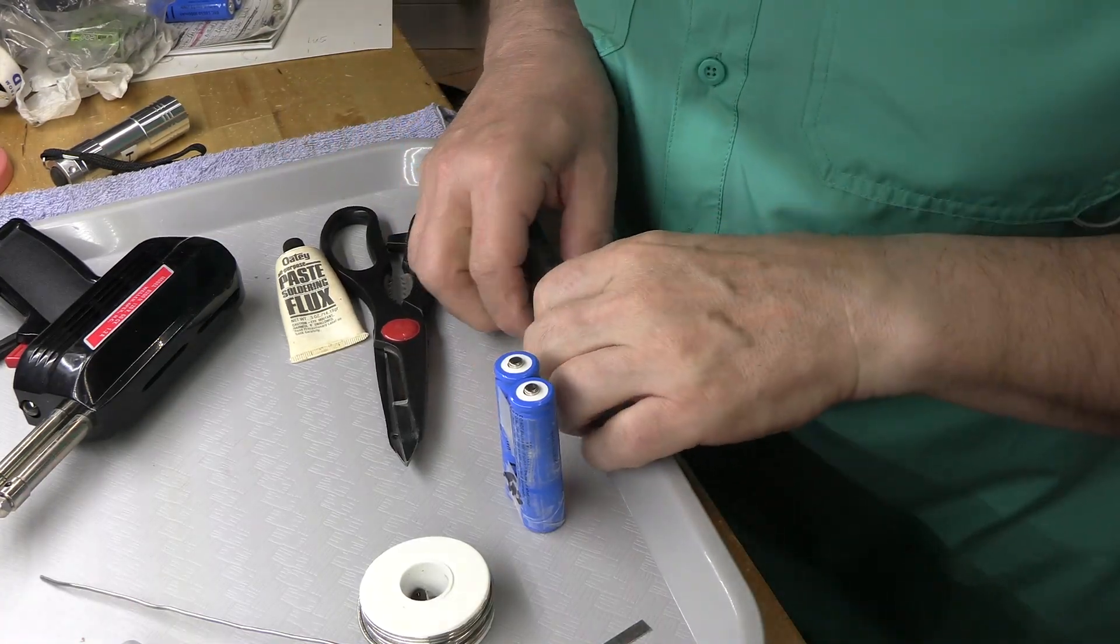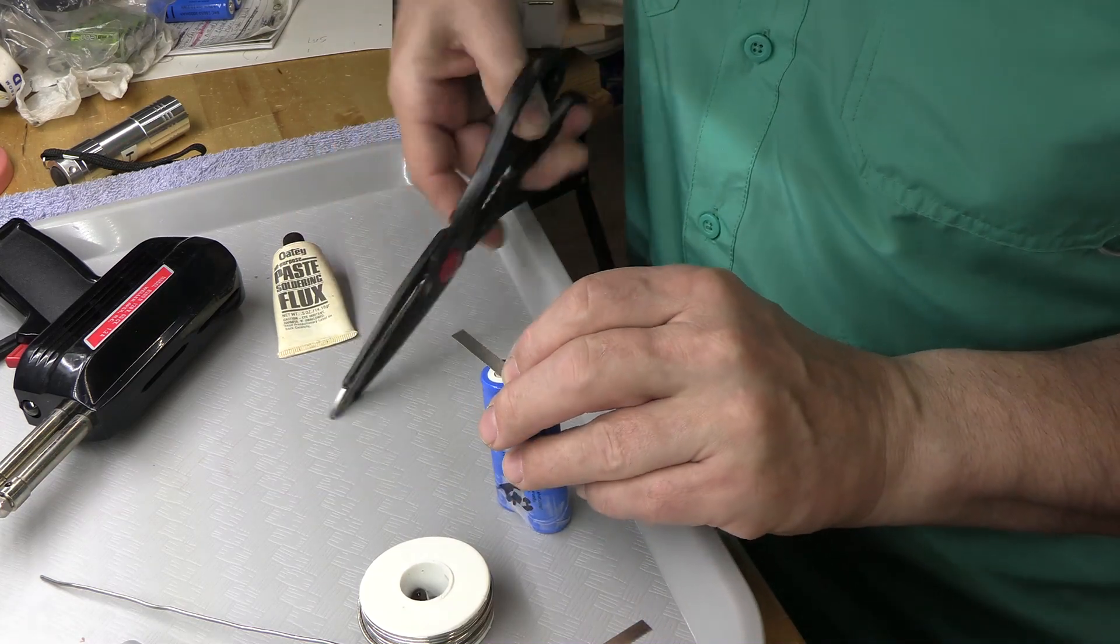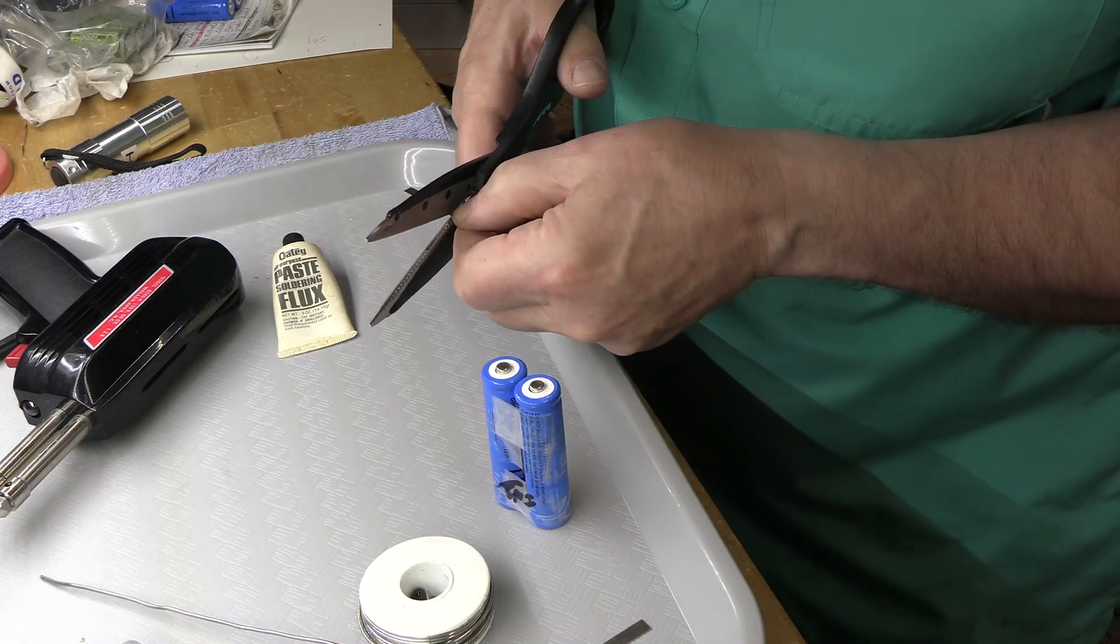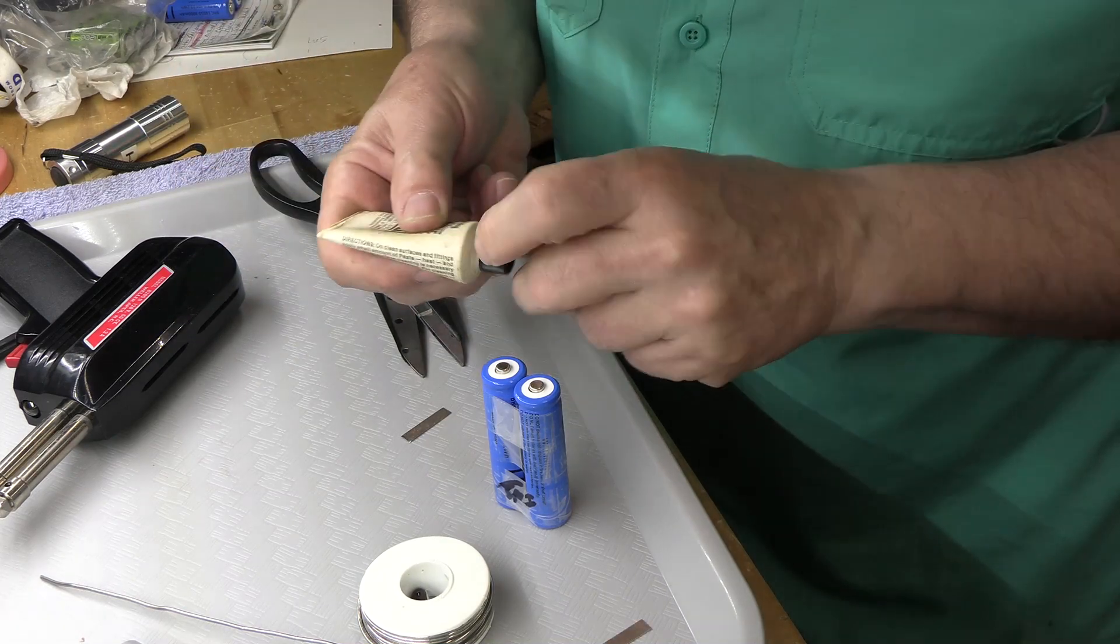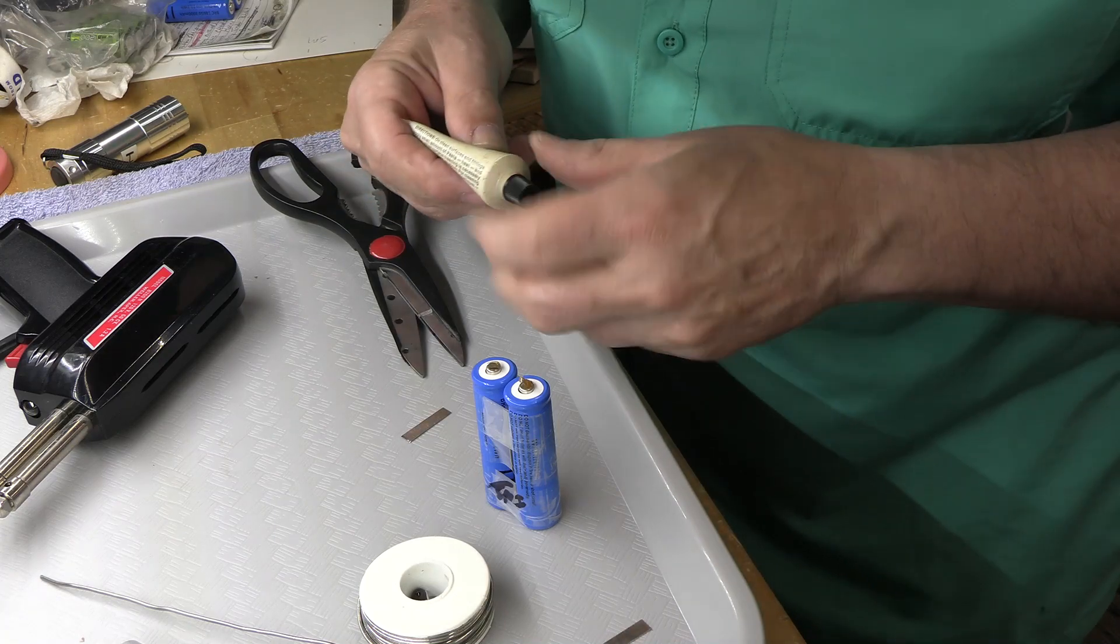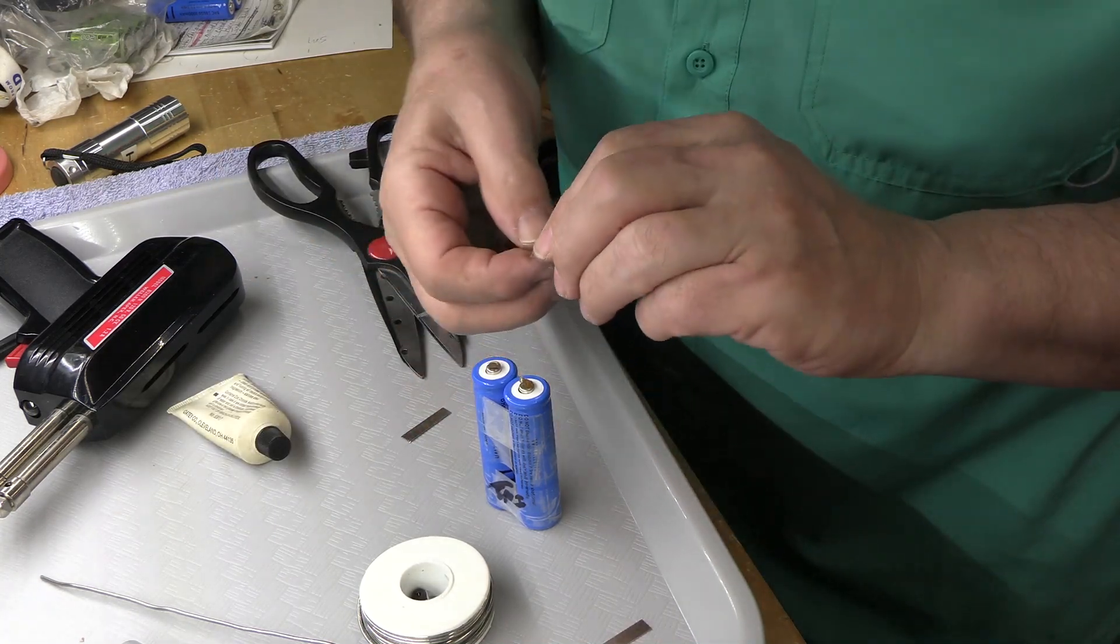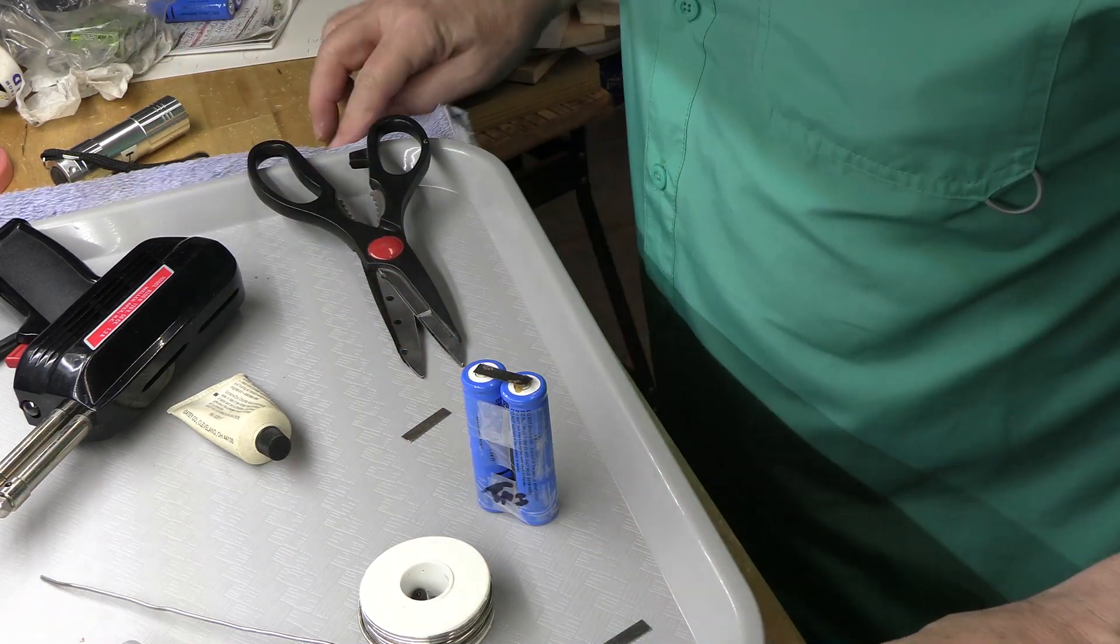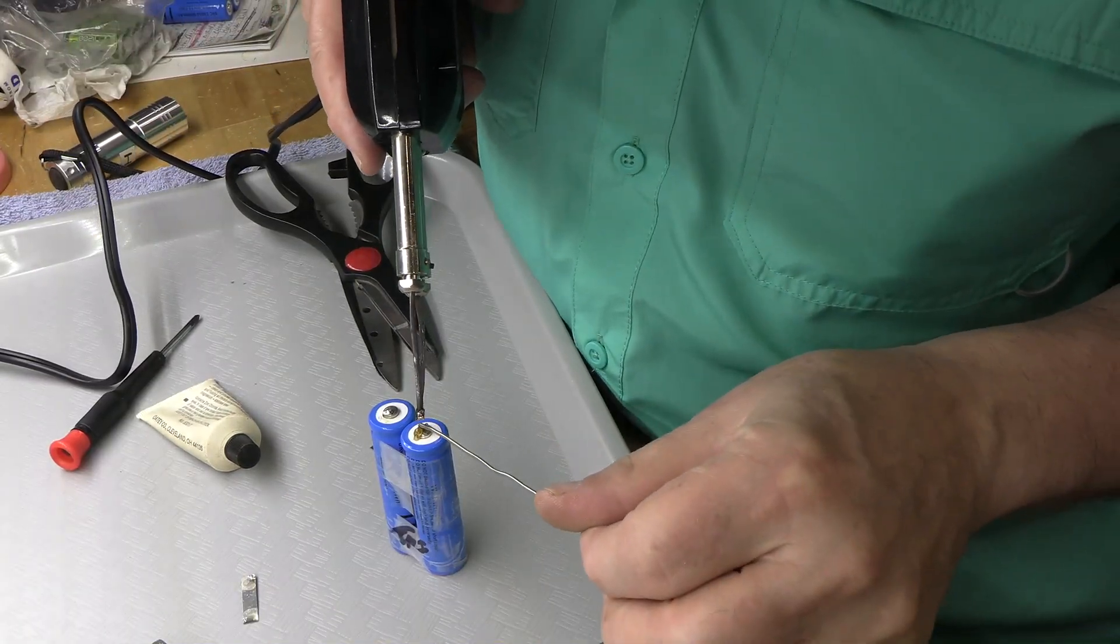The negative side. So I'm going to put the nickel strip here, which are made by the way to do this, and I'm just going to cut it to length with the scissor. Put a little flux on the ends.